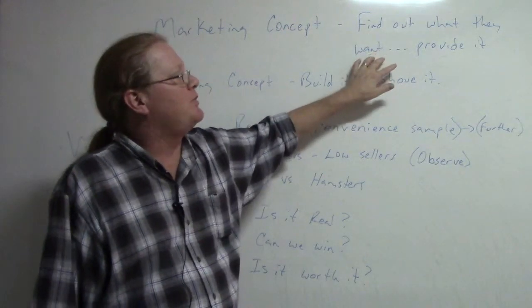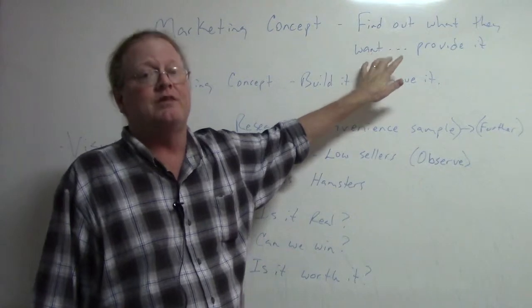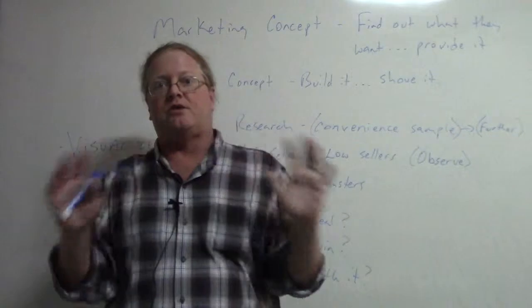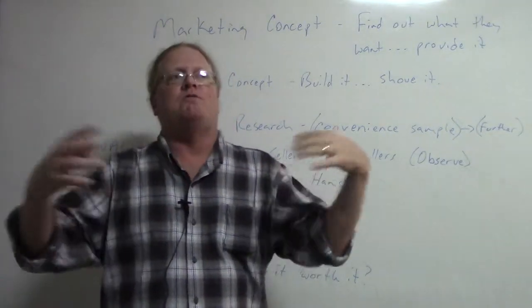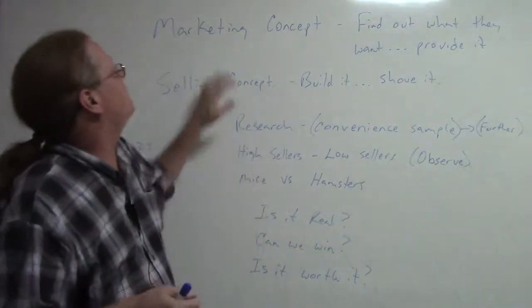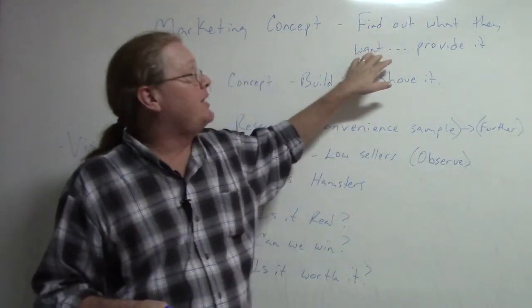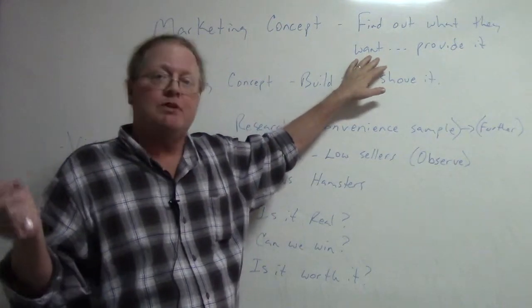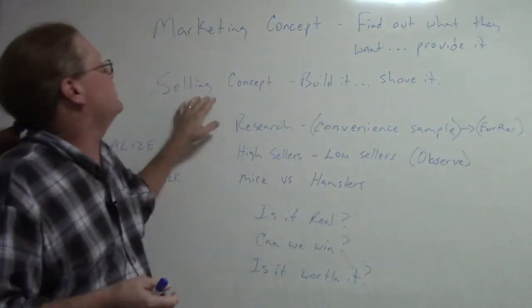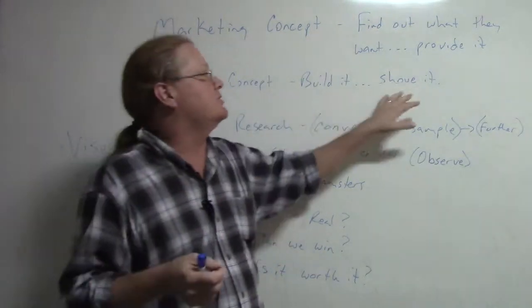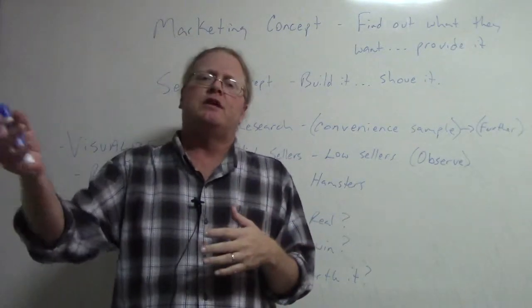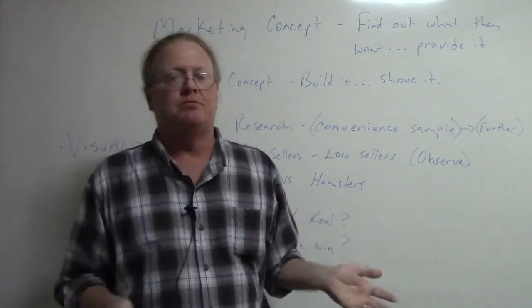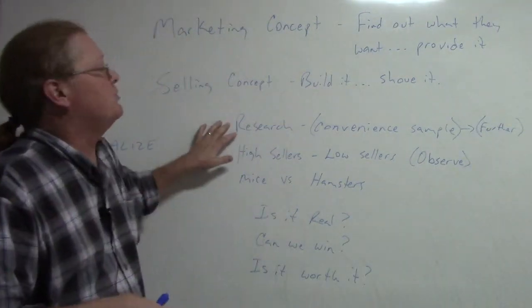Find out what the people want first and then provide it. We went out and looked for private label opportunities. We found out what was available. Now we need to practice the marketing concept and find out if our opportunities are things that people really need. The selling concept is just to build the product and shove it, or just pick a private label for an item, import it, slap a label on it and be done.